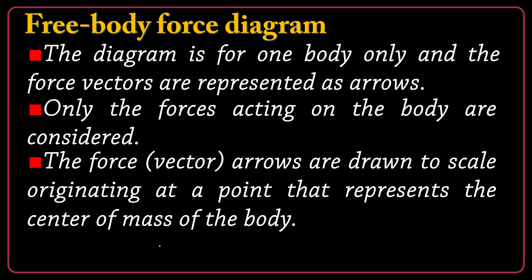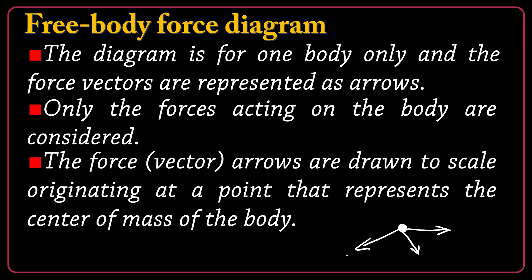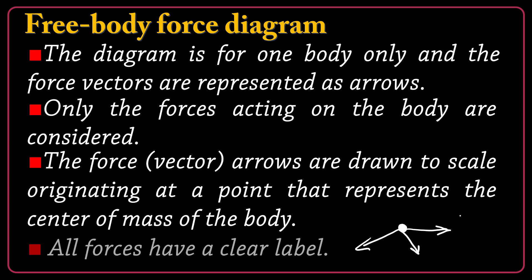The third rule is that the force vector arrows are drawn to scale. Drawn to scale means that if one force is larger than another, you use a larger arrow for the larger force, originating at a point representing the center of mass of the body. Regardless of shape, size, or color — even a huge airplane is just a point for us, the center of mass. All forces are labeled arrows starting from that point; the tail of the vector is at the center of mass. The last rule is that each force must have its own label.